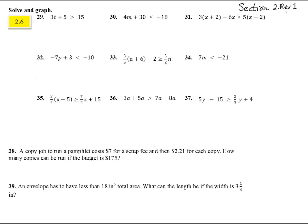Here we are, chapter 2 with the review 1, and we're going to do the answers 29 through 39 here. It says solve, so we're going to have to get a solution here, and we're going to have to graph it. Start off with number 29. 3t plus 5 is greater than 15, subtract 5 from both sides, and we have 3t greater than 10. Divide both sides by 3, and we get t is greater than 10 thirds.